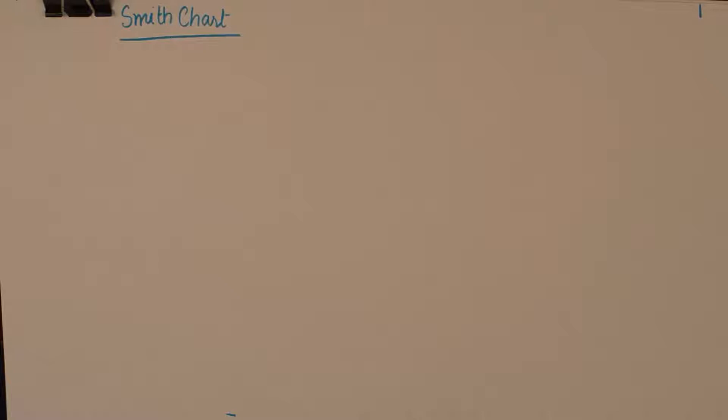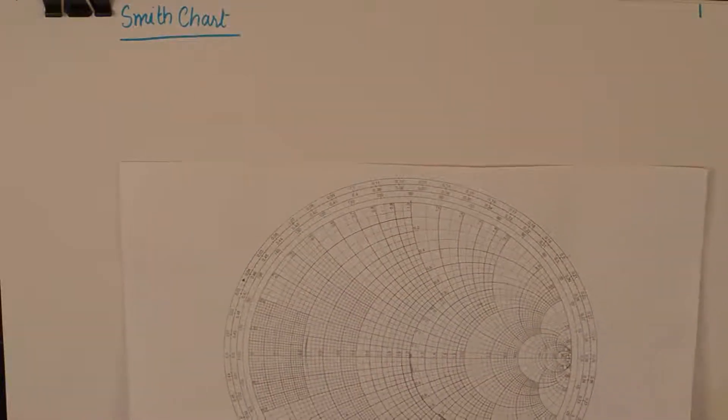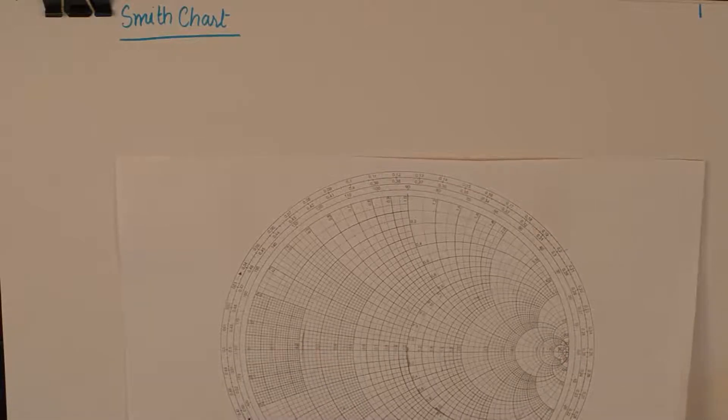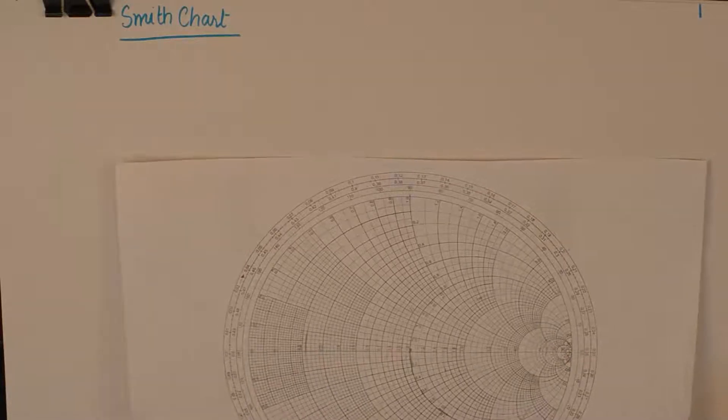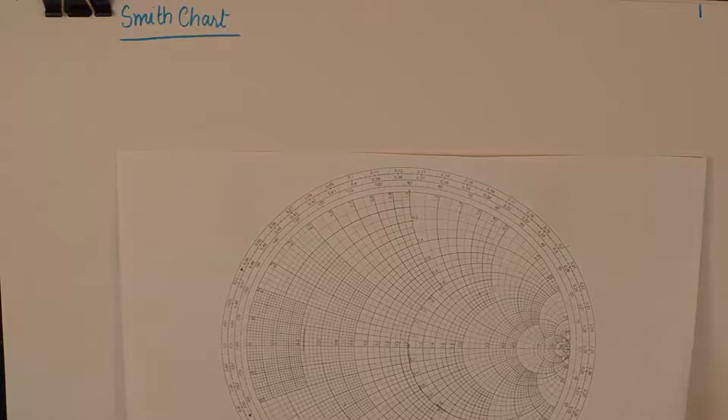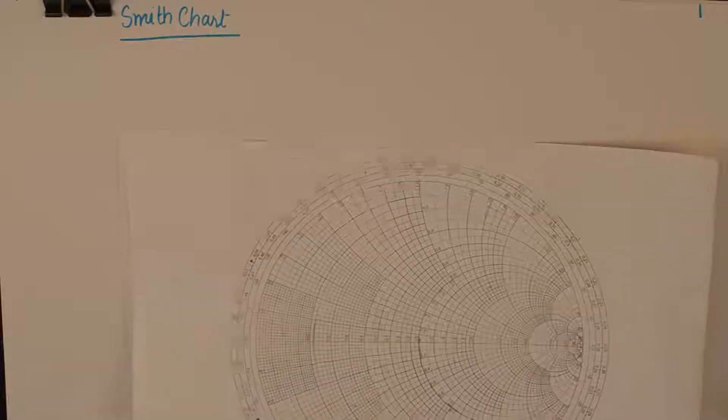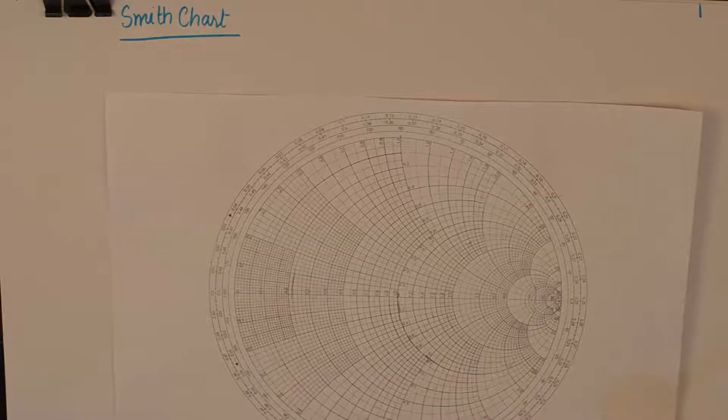Smith's chart is a graphical method of analyzing the load impedance, the normalized impedance, and it is a method to calculate standing wave ratios and reflection coefficient. And this is how a Smith's chart looks like.